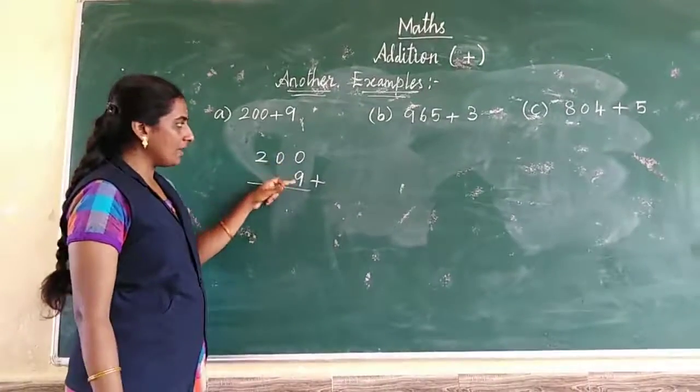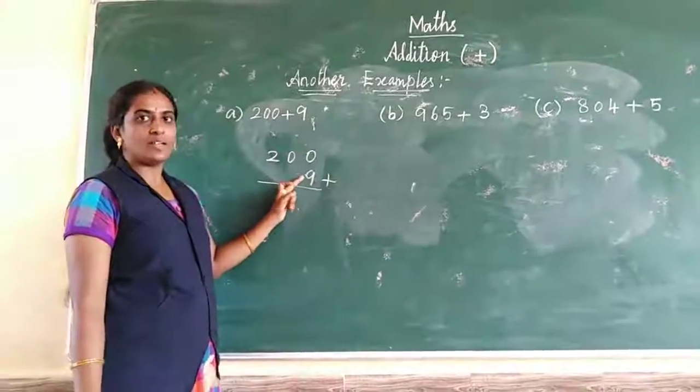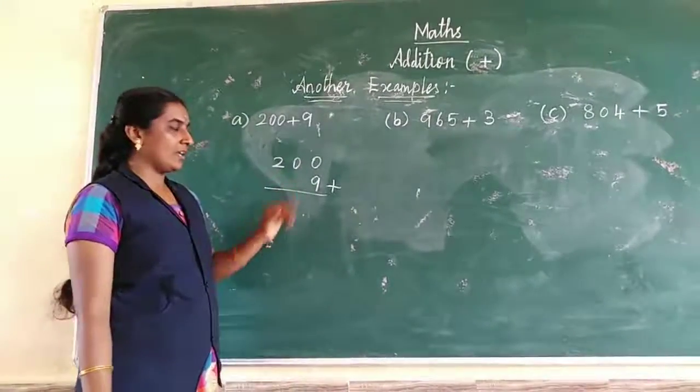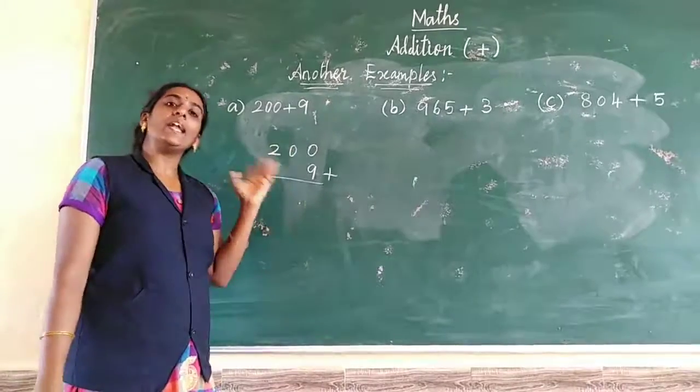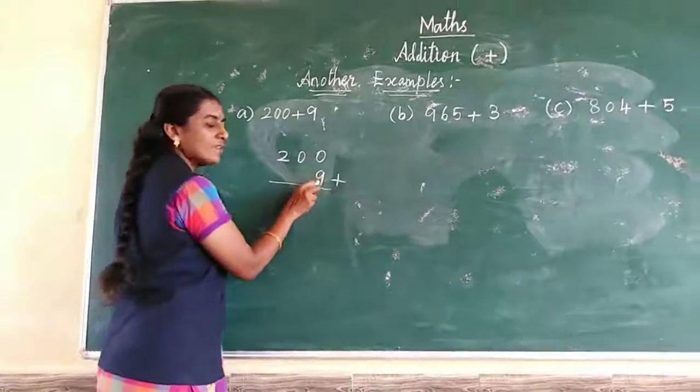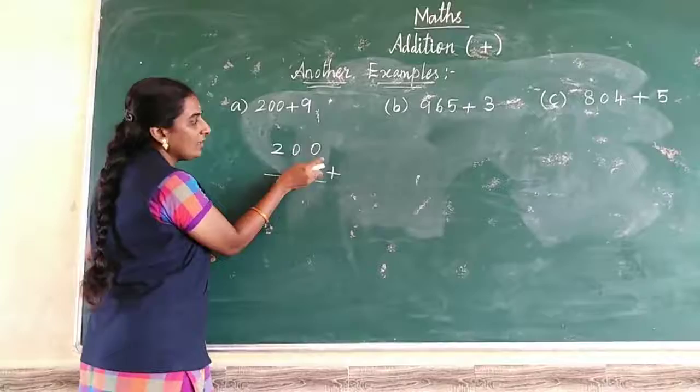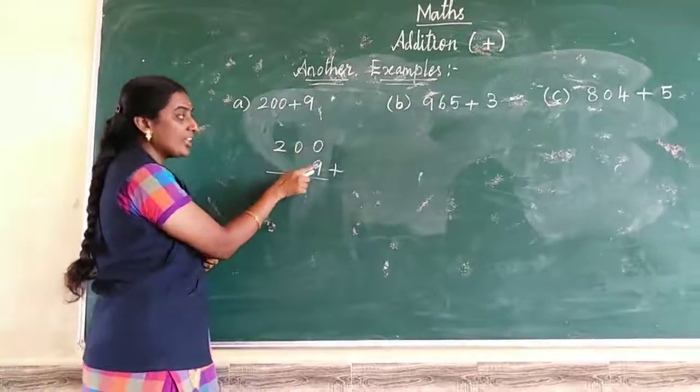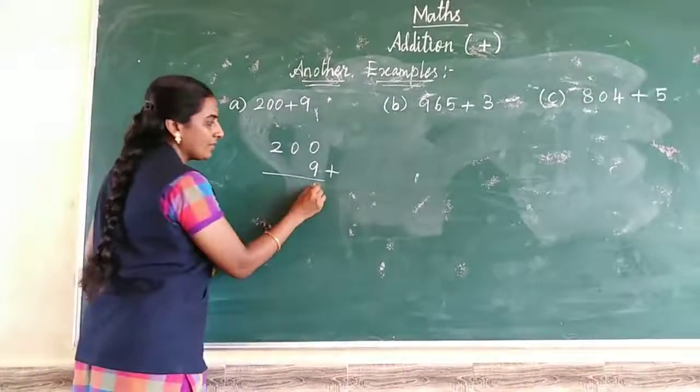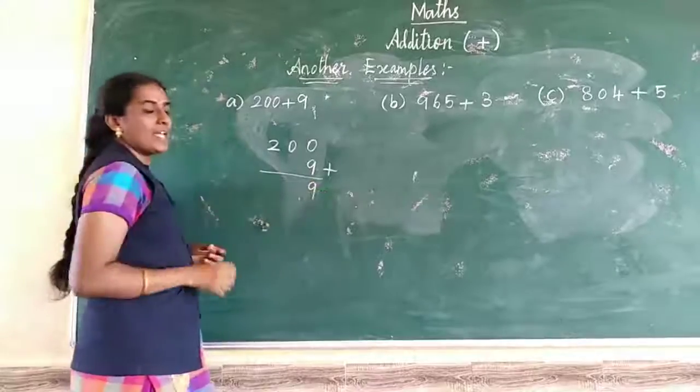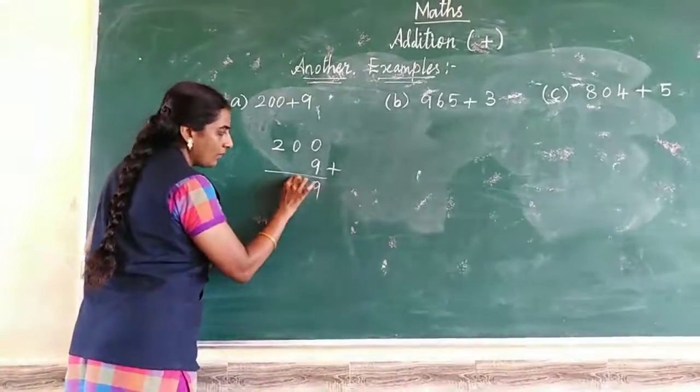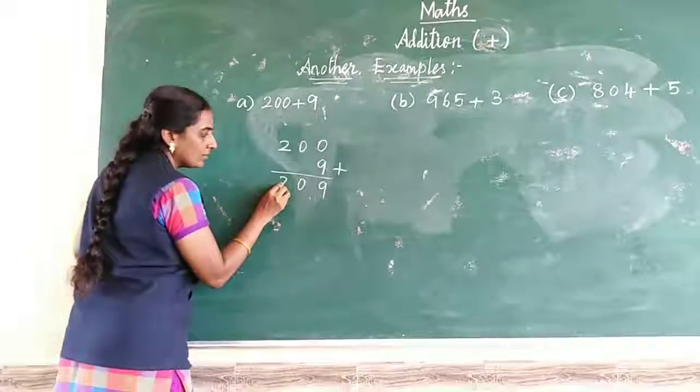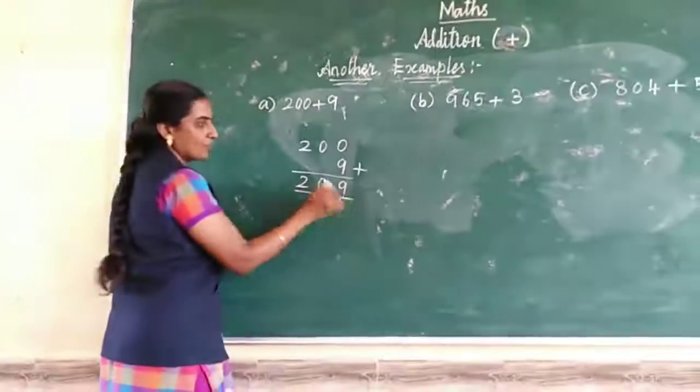Look at the ones place: 0 and 9. When we add 0 with any number, the answer is the same number. So 0 plus 9 equals 9. Next, the tens place is 0, so write it down. The hundreds place is 2, so write it down.